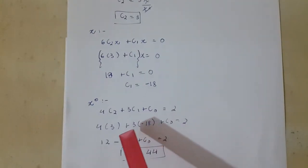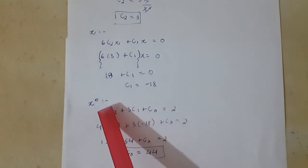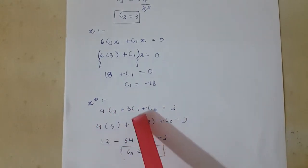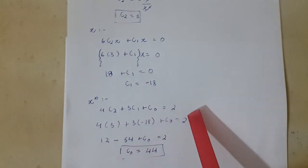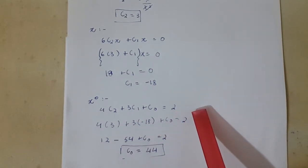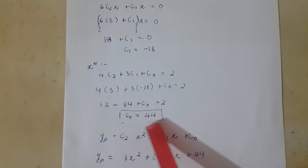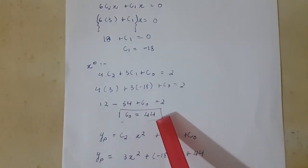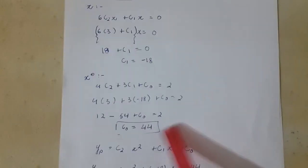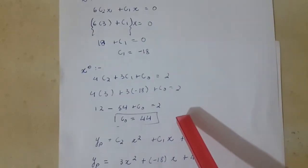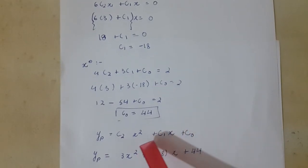Now I am comparing c^0. 4c2 + 3c1 + c0 = 2. Putting the value of c2 and c1, I got the value of c0 equals 44. Now I know the values of c2, c1 and c0, I will simply put them in the equation of yp.